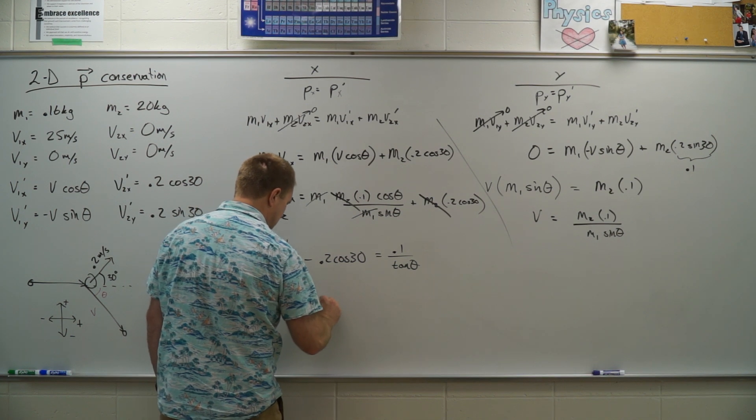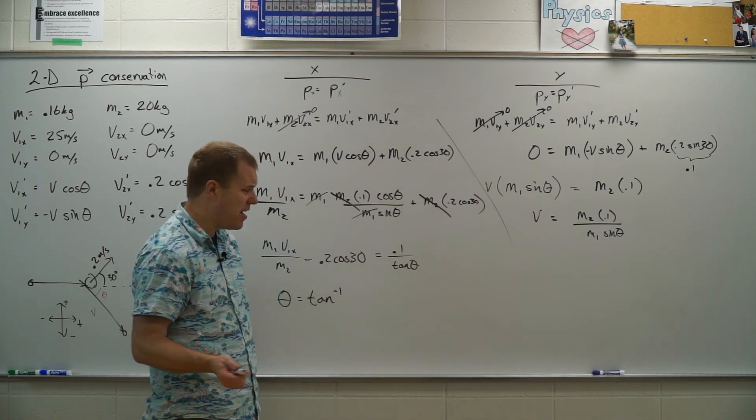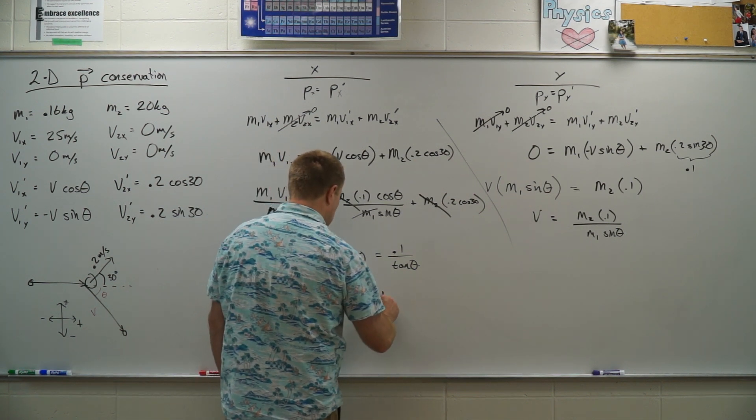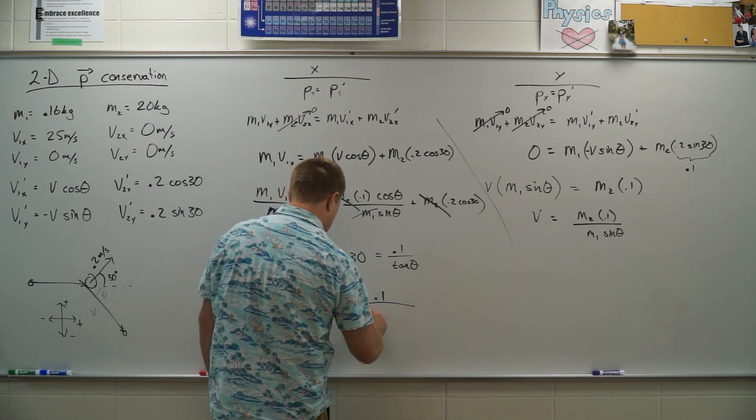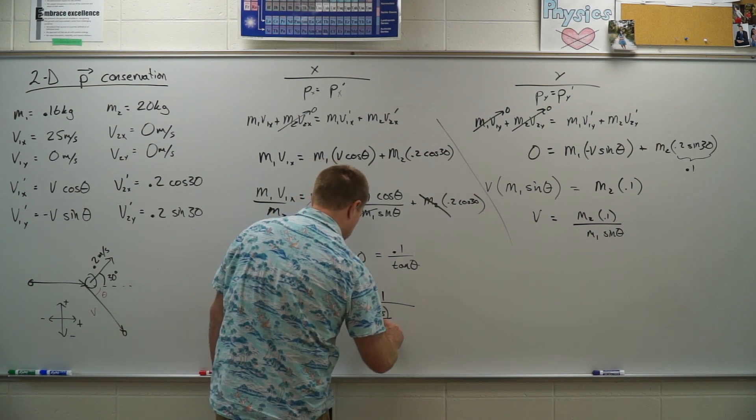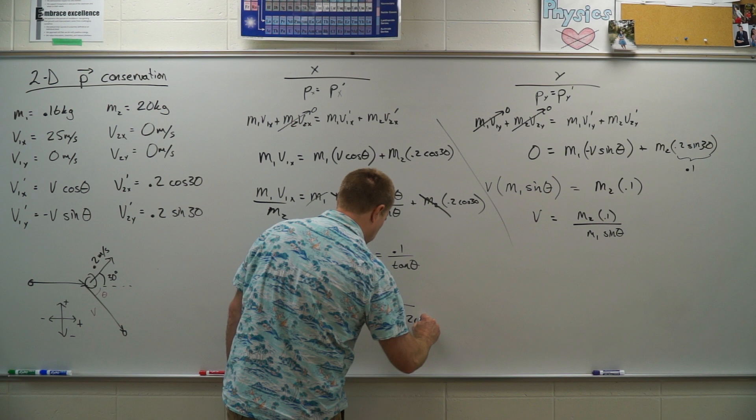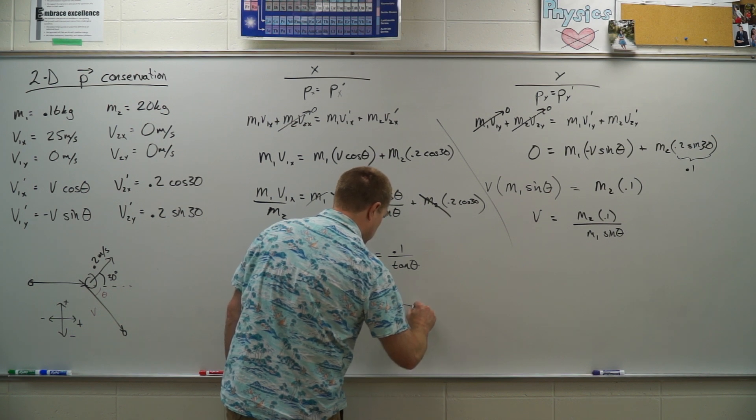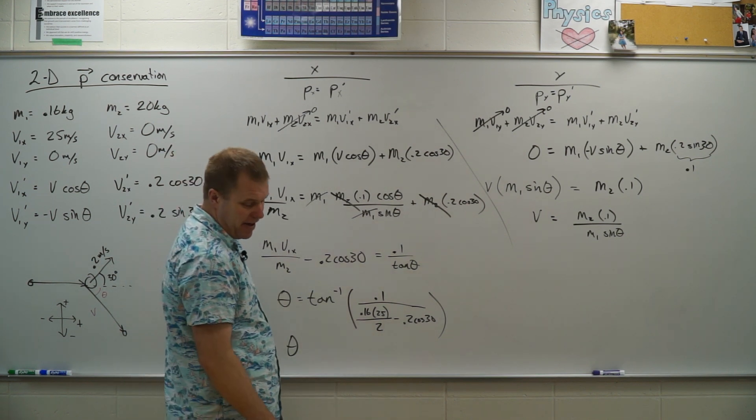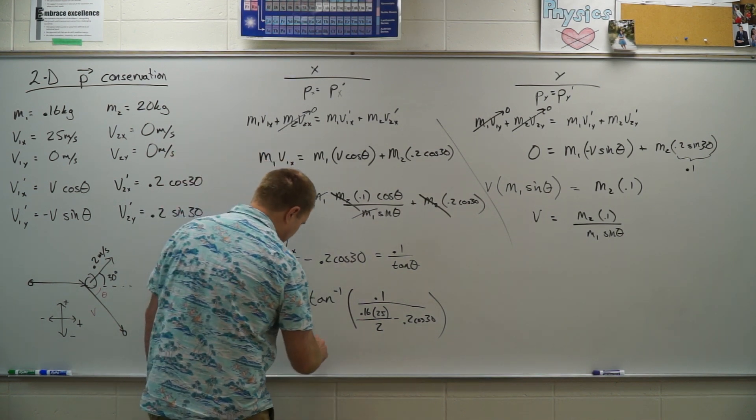So theta is going to be the inverse tangent. Again, could I have used solver on this? Probably. This is just going a little faster, I feel like. So 0.1 divided by, so then we have our 0.16 times 25 divided by 2 minus 0.2 cosine 30. And that gives me a theta value of 75 degrees.